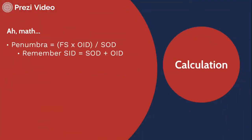Sometimes the math is just the best way to go about it. The formula for penumbra is: focal spot size times the object-to-image receptor distance, divided by the source to object distance (SOD).